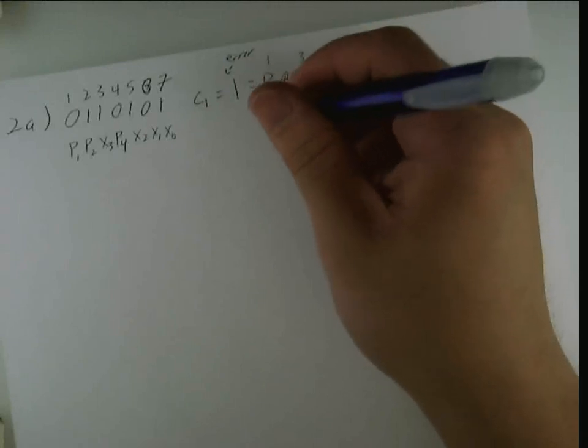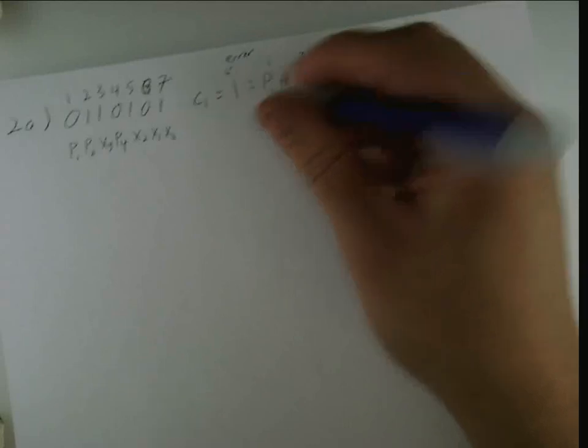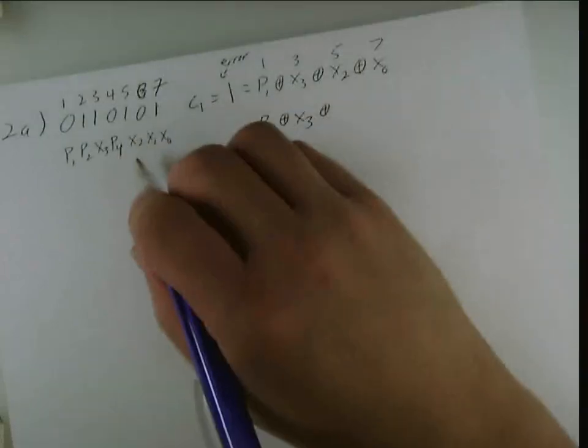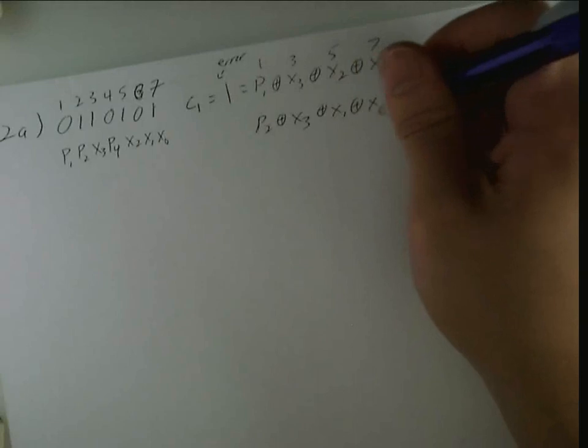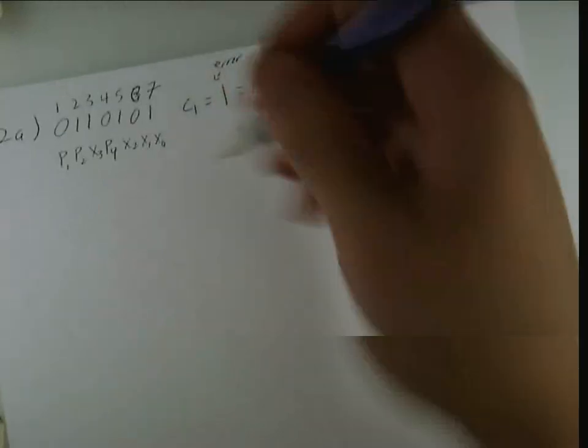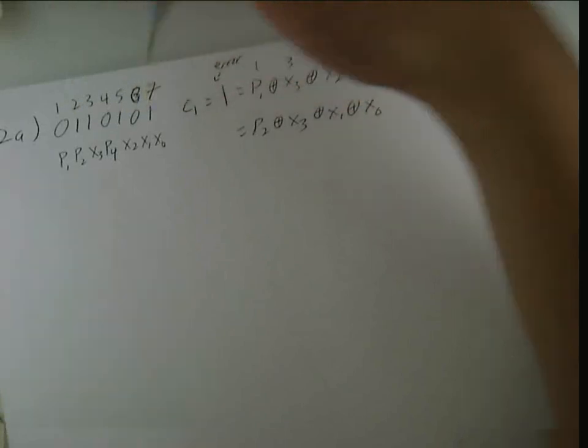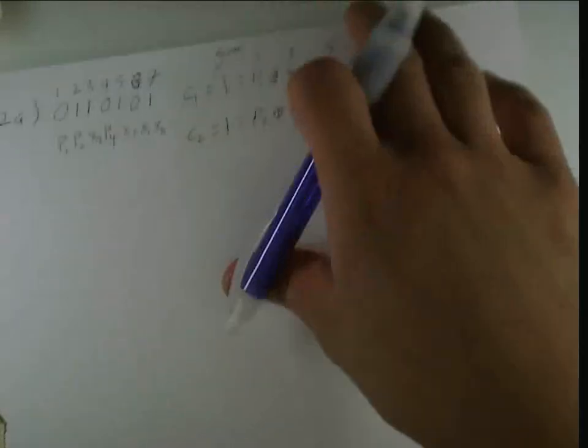And then p2, xor, so it's going to be x3, xor x1, xor x0. And, we're just going to count up the bits again. So, 1, 2, 3. So, we have an odd number, so this would indicate 1. And, this would be our check bit 2.